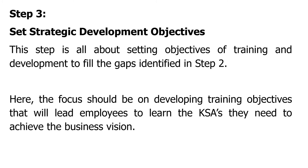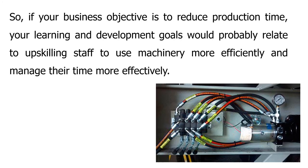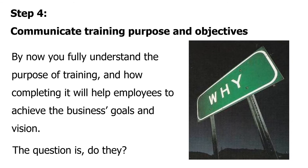Step three: set strategic development objectives. This is the planning stage — the focus is on skills, knowledge, and abilities to meet the business's vision. For example, if your business objective is to reduce production time, your learning and development goals would probably relate to upskilling staff to use machinery more effectively and efficiently and manage their time better.